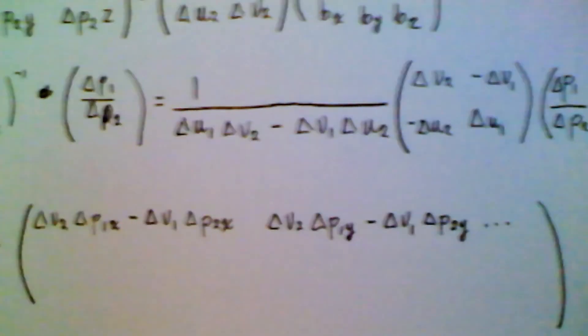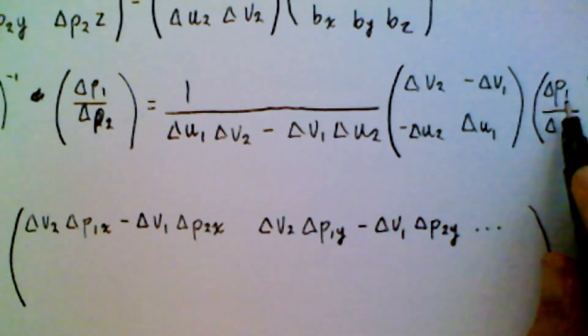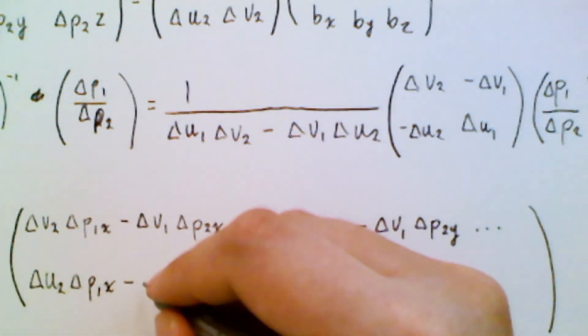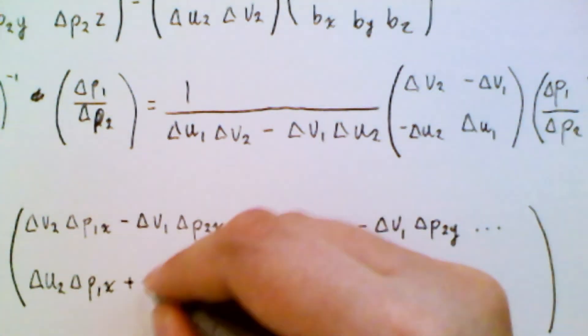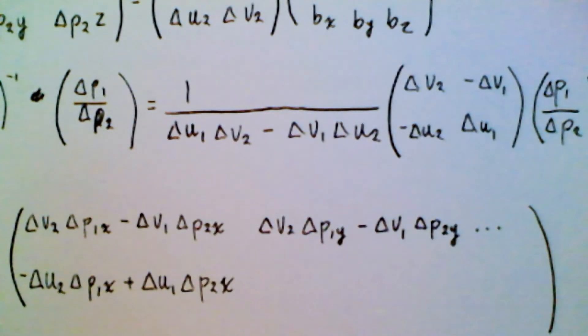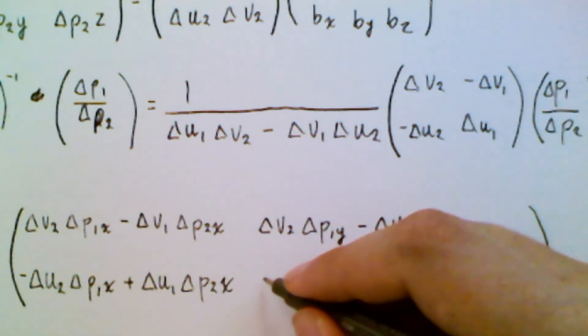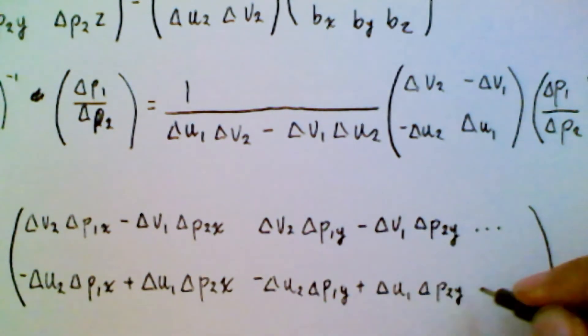And then for the bi tangent, well, we do this with the second row. So we have minus u2 times the x component. And then positive delta u1. Like that. And that gives us the x component of the bi tangent. And then we go, do it again. And that would give us the y component of the bi tangent. And so on and so on.